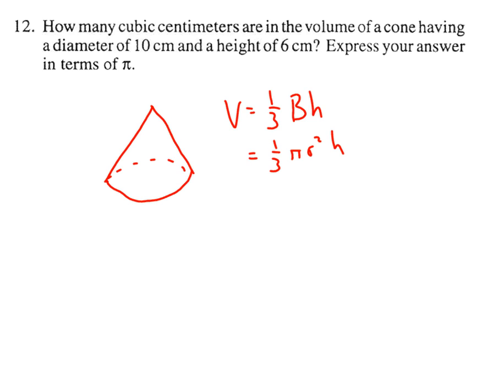So what we need to know is the radius and the height. Well, both of those are really easily given to you. If the diameter of the cone is 10, then the radius is 5.